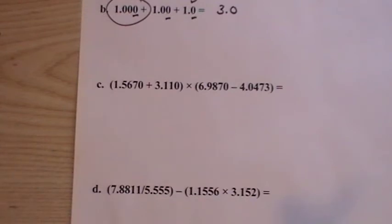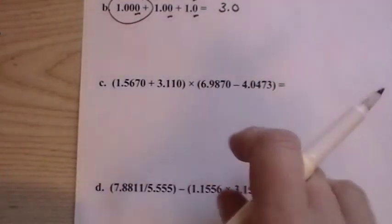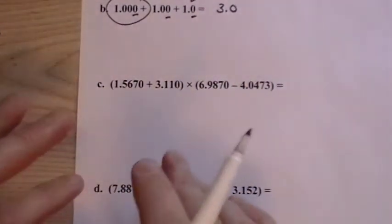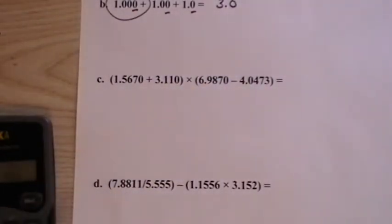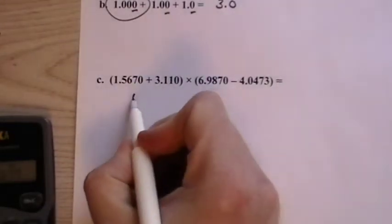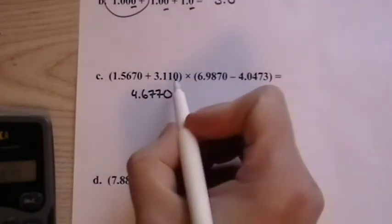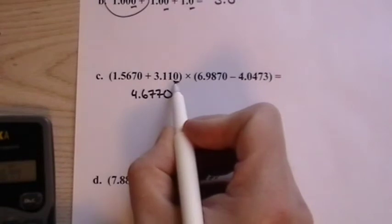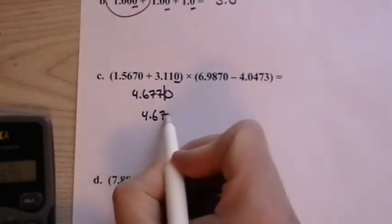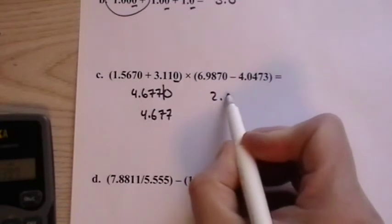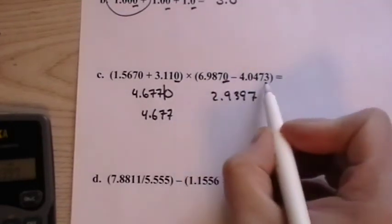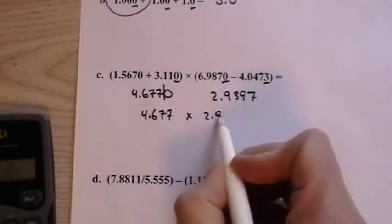When we have addition and subtraction, multiplication and division all mixed up together, we have to do them one step at a time. And here we put parentheses around addition and subtraction so that we do those first. And so let's do them out. Do this out first and round. 1.567 plus 3.11. And this is 4.6770. But since we've added, we have to go out only to the third decimal place. So we stop here. So our answer is 4.677. And then we have on the other side, 6.9870 minus 4.0473. And we get 2.9397. Both went out to the fourth decimal place. So we get to keep all those digits. Don't have to round.